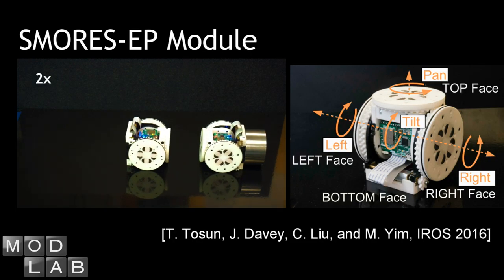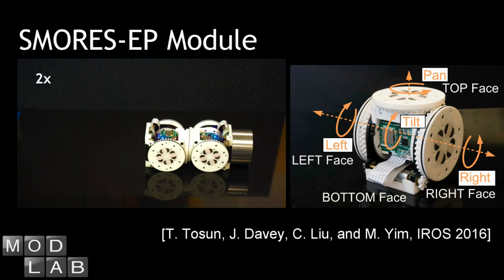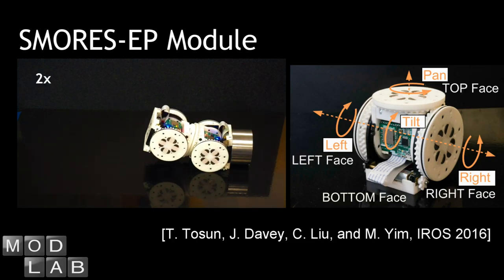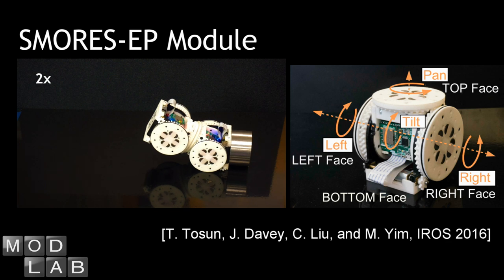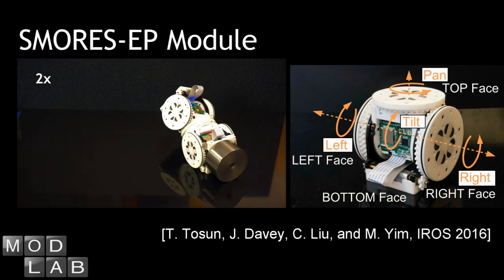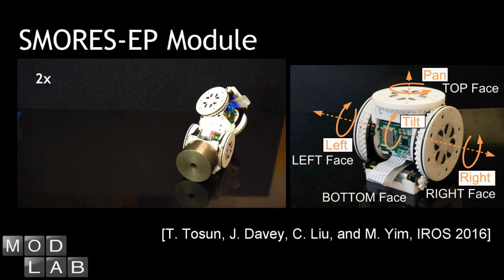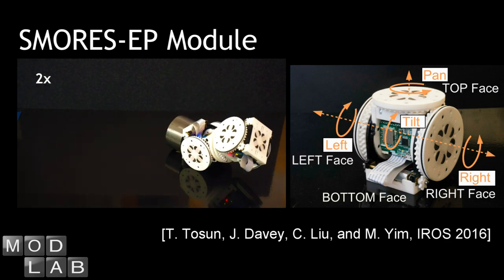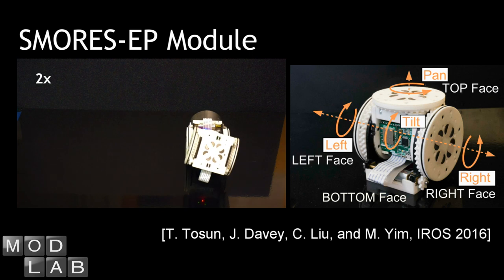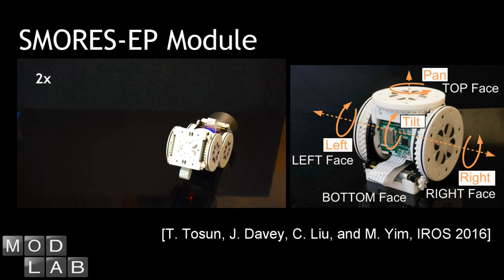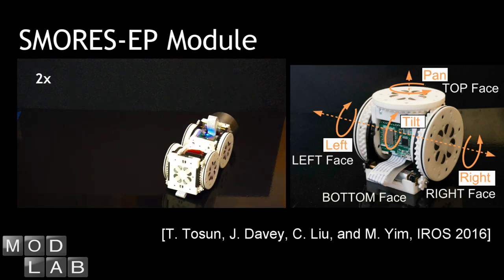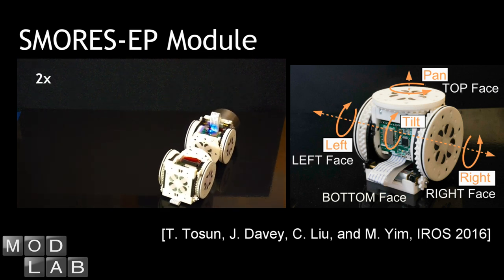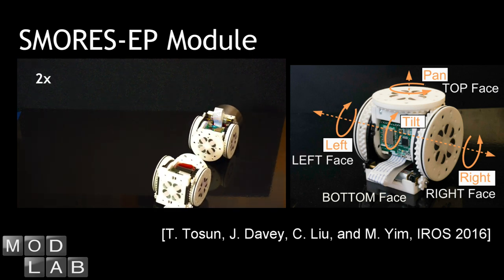SMORES EP is a modular robotic system developed by the ModLab. Each module has four degrees of freedom and four connectors. Two modules can be connected in 17 different ways. Its reconfiguration ability has been demonstrated in our previous work and is shown here.